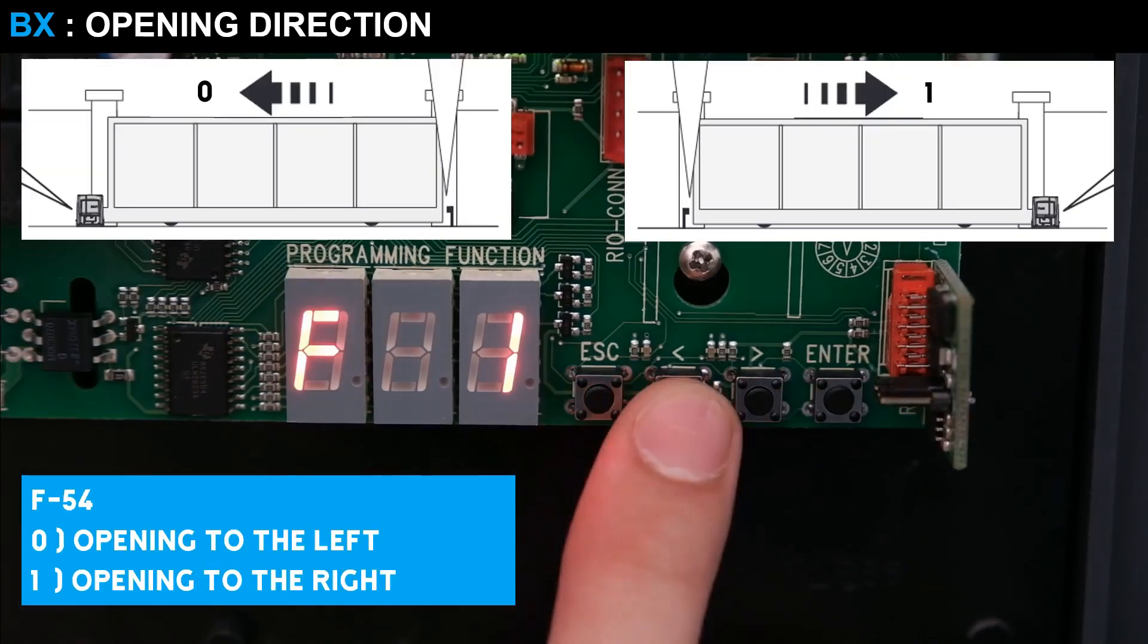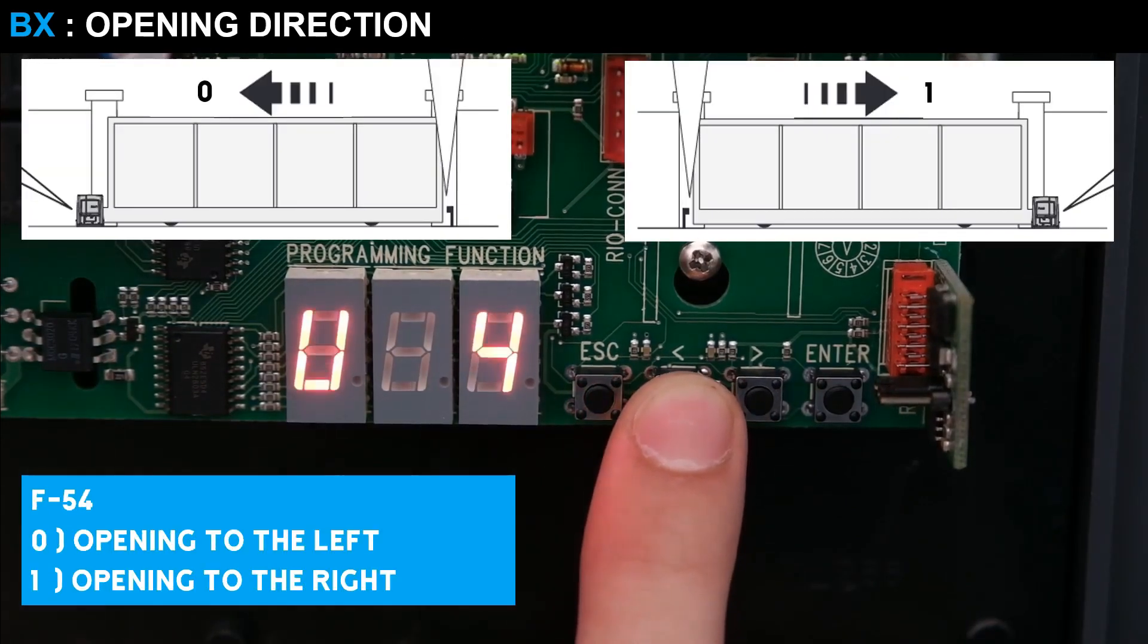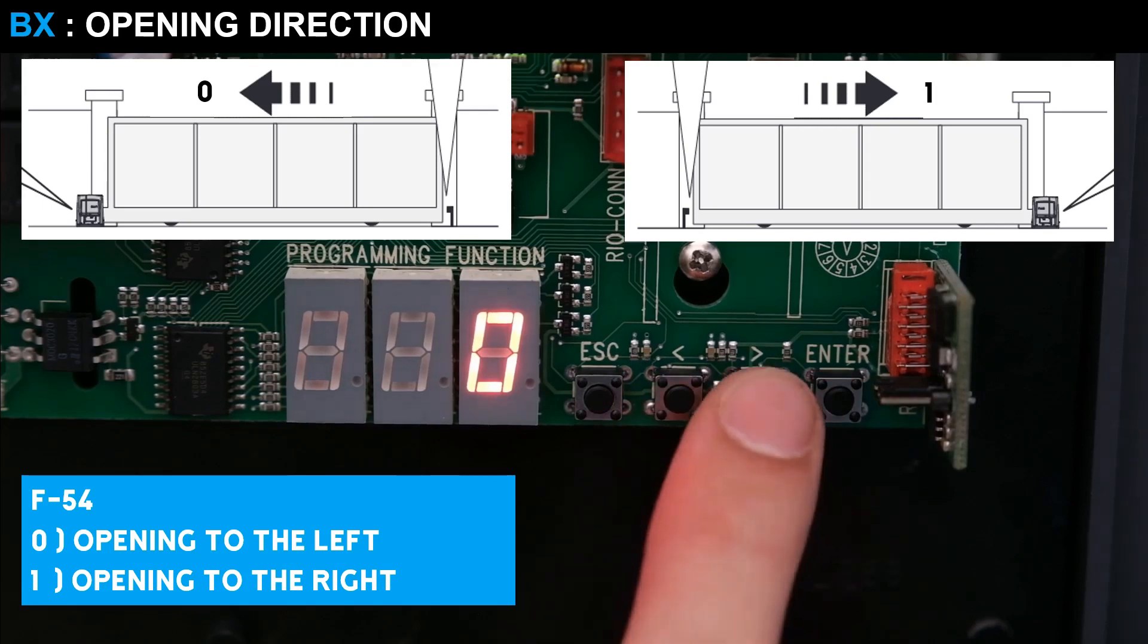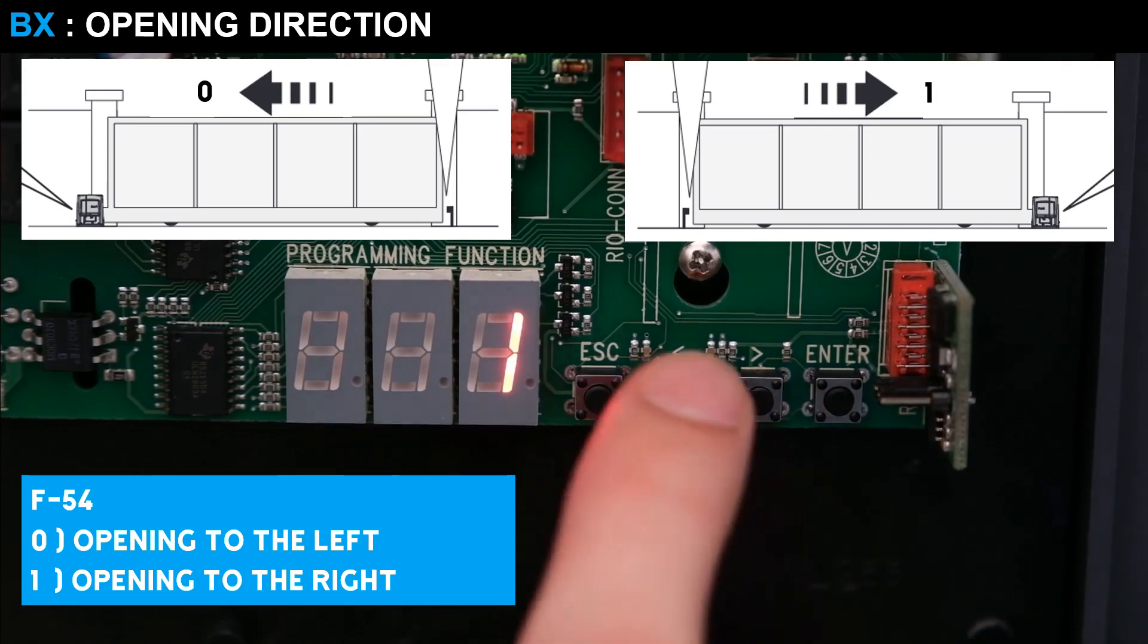Now let's configure the opening direction through function F54. Select 0 for gate opening to the left or 1 for gate opening to the right. In our case, the gate opens to the left, so we select the value 0.